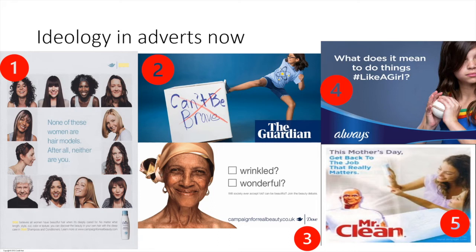Advert three is another Dove advert. They're clever in the sense that they use old ideology around age and appearance, contrasting with new ideas about being happy in your own skin. The first box says 'wrinkled?' — the old ideology — contrasted with 'wonderful?' — juxtaposing these two ideas to help us understand that we are beautiful just the way we are. Number four — Always brought out a series of adverts challenging the ideological saying 'like a girl' — run like a girl, hit like a girl — used to minimize how great women and girls can be. In this advert, we have a little girl ready to throw a baseball, but remember they are still benefiting off our ideas and our values.